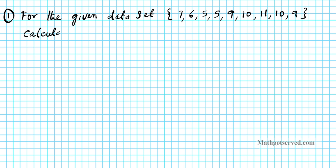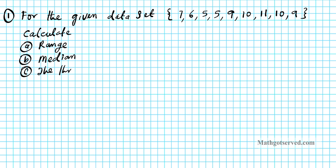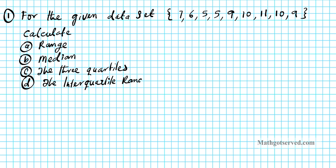For this given data set, calculate: A, the range; B, the median; C, the three quartiles; D, the interquartile range, also referred to as the IQR; and last but not least, make or sketch a box and whisker plot.